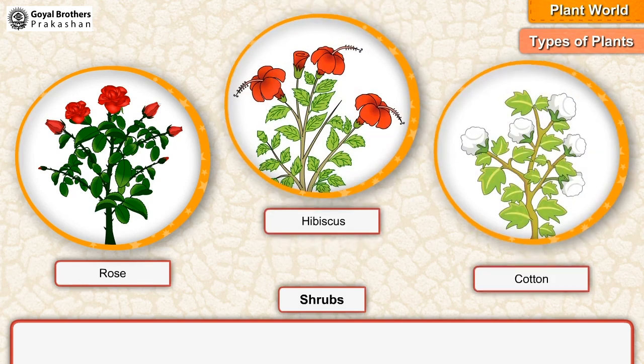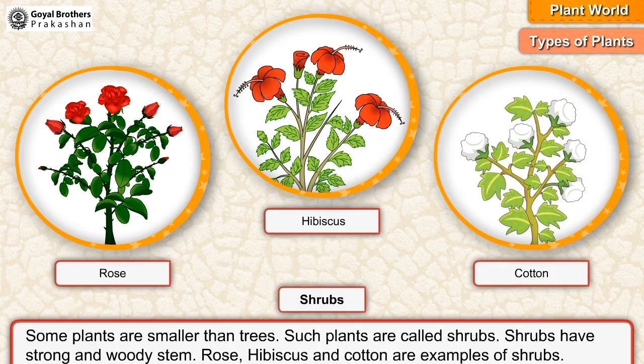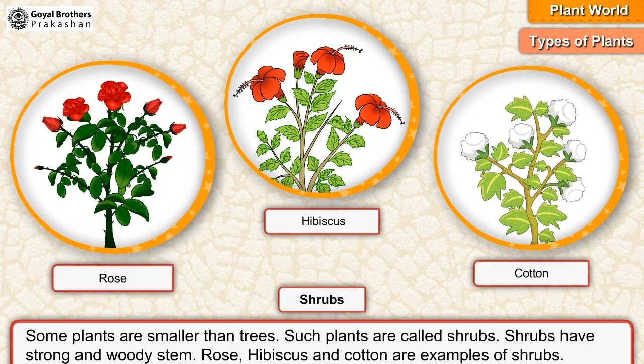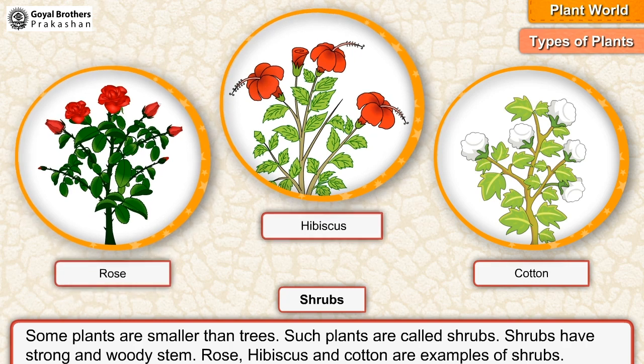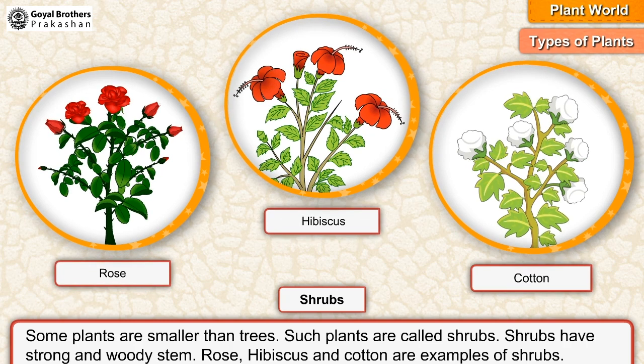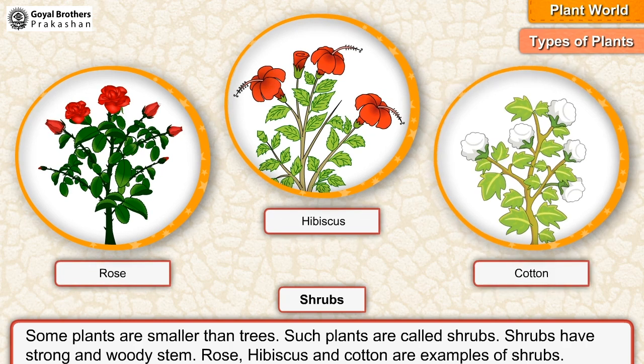Shrubs: some plants are smaller than trees. Such plants are called shrubs. Shrubs have strong and woody stem. Rose, hibiscus and cotton are examples of shrubs.